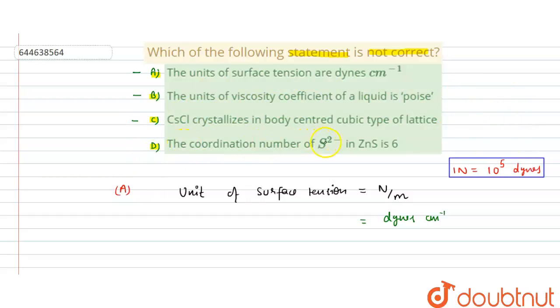Now D: the coordination number of S²⁻ in ZnS is 6. No, this is not the correct answer.